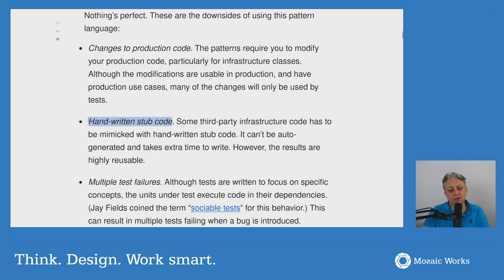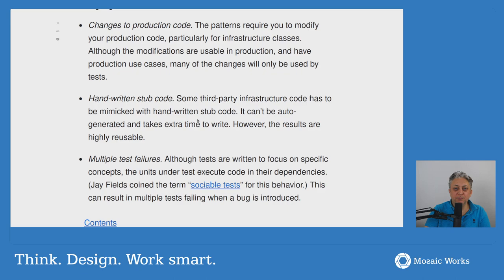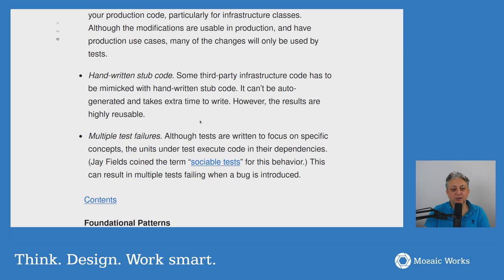Handwritten stub code is another trade-off — you'll need to write some handwritten code. He says it can be auto-generated and takes extra time, however the results are highly reusable. My feeling is you'll end up with certain patterns you can reuse, and maybe some kind of generic implementation of a nullable class with different type implementations. But maybe it will be specific to your codebase and not something you can reuse between codebases — I'll have to try this out.